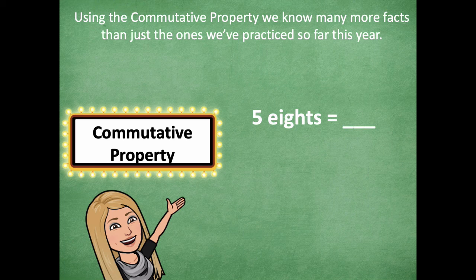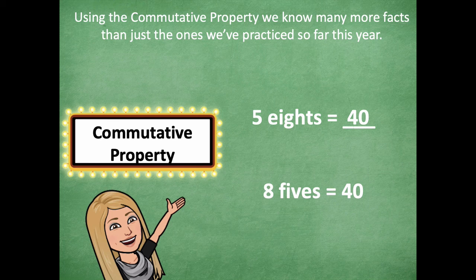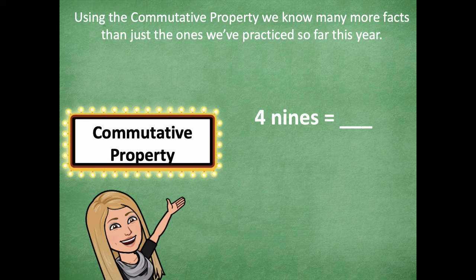If I know five eights — five times eight — is 40, I can flip-flop those factors using the commutative property, and eight fives equals 40. Flip-flop those factors and you've got a whole other set of facts you can solve very easily. Let's look at another one: four nines — four times nine — what's four times nine? It's 36! So if four nines is 36, then nine fours is also 36.